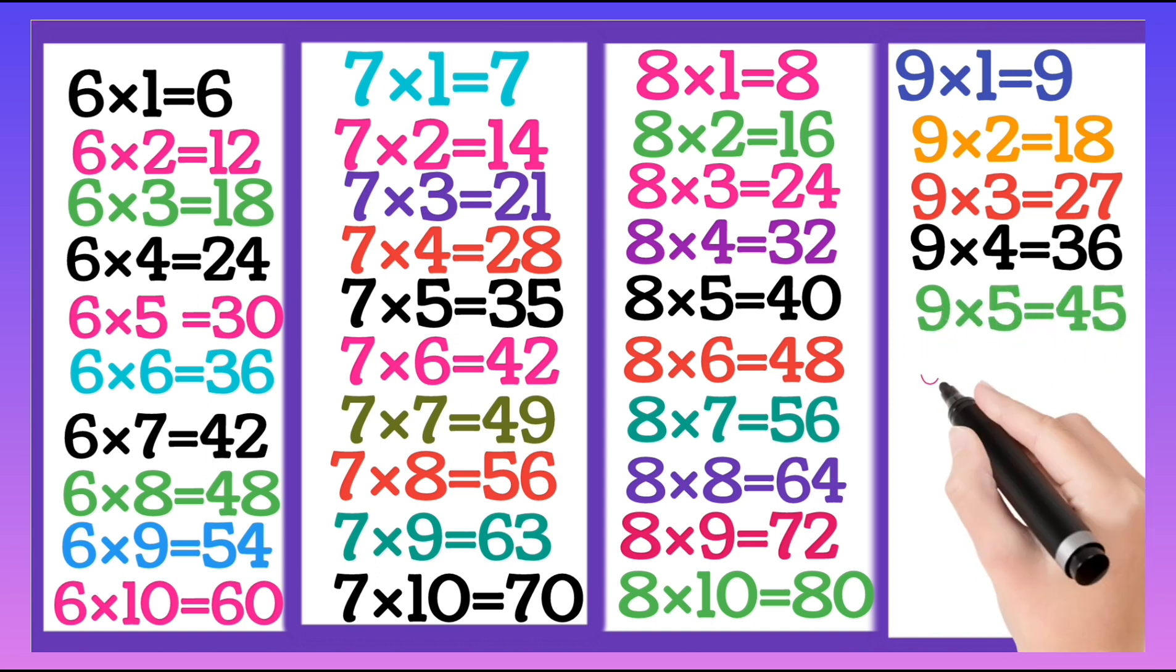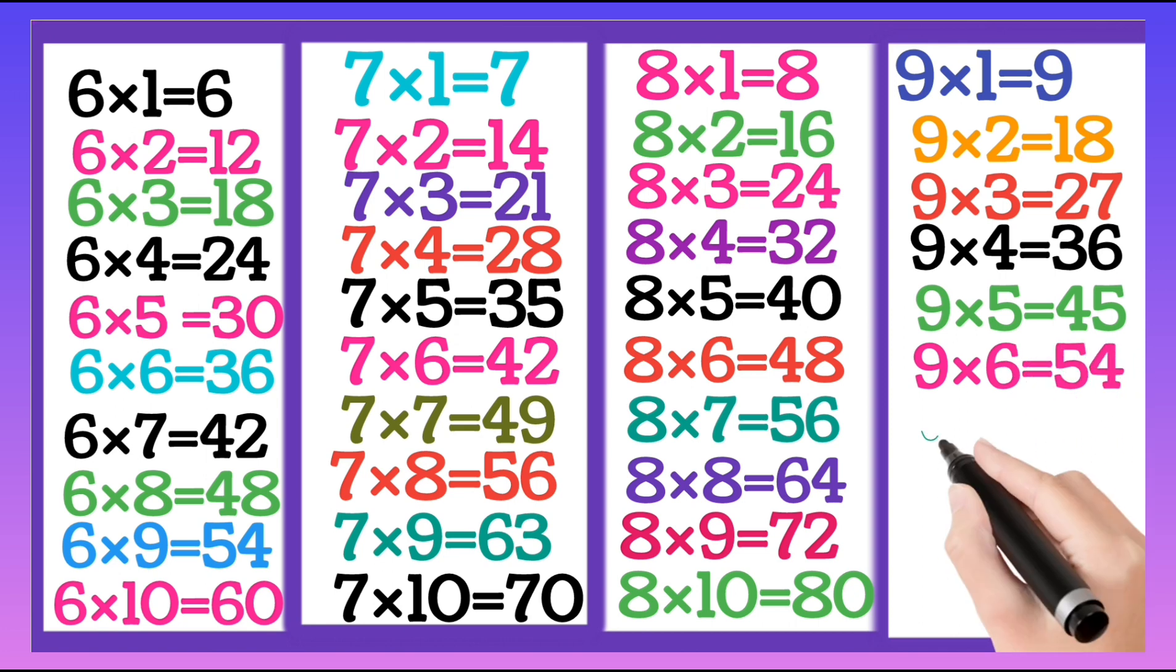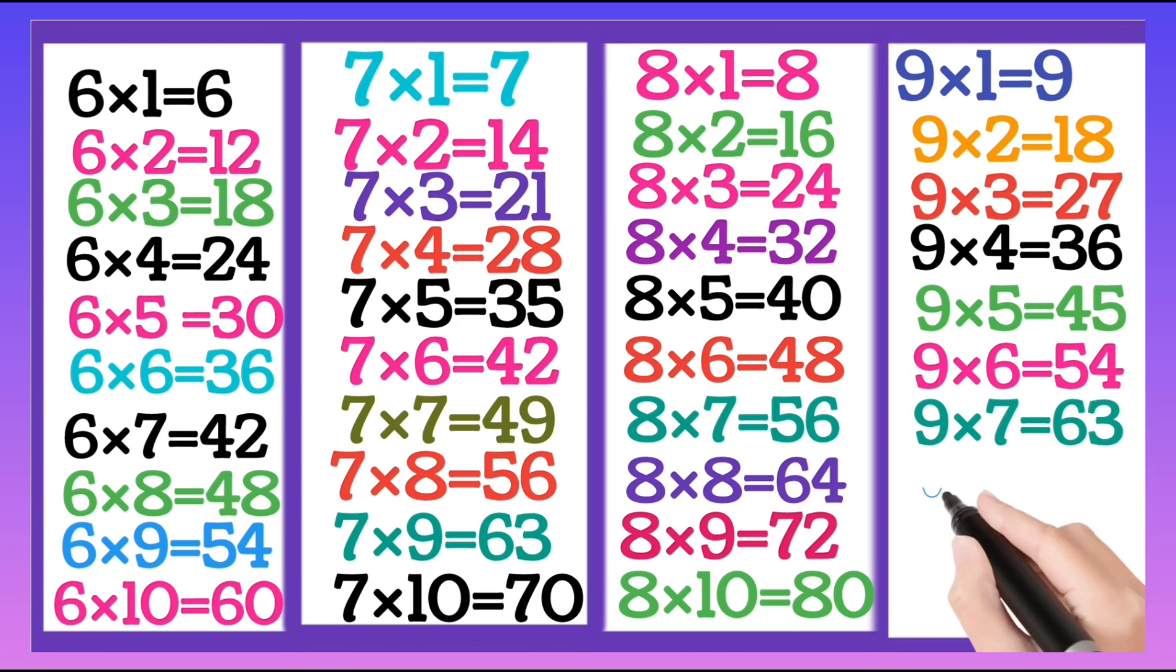9 fives are 45, 9 sixes are 54, 9 sevens are 63.